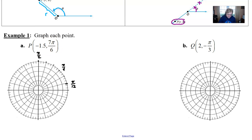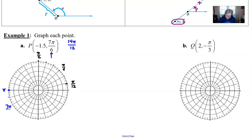I look at the angle first, even though it comes second in the coordinate. So 7pi over 6 is the same as 14pi over 12. Arriving at pi — which is 12pi over 12 — then counting to 13, 14pi over 12 takes us in this direction. So that's where 7pi over 6 is normally located. However, because my radius is negative 1.5, I need to go backwards — to the opposite side — moving one concentric circle and half of another. That is where point P is located. Notice I went to the opposite side of the pole because of the negative r value.